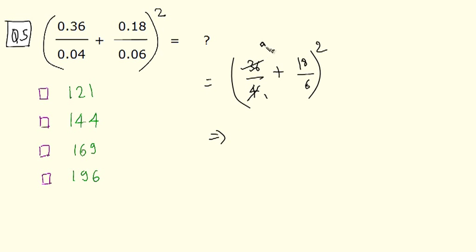4 ones are 4, 4 nines are 36, 6 ones are 6, 6 threes are 18. So we have 9 plus 3 whole square and 9 plus 3 is 12. So 12 square which comes out as 144. 12 square is 144. So this is the right answer: 144.